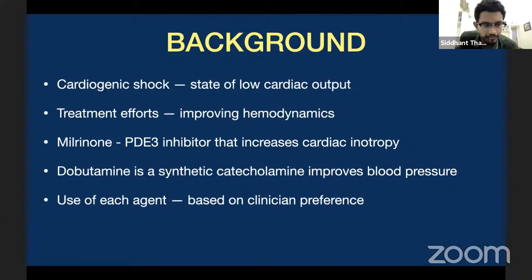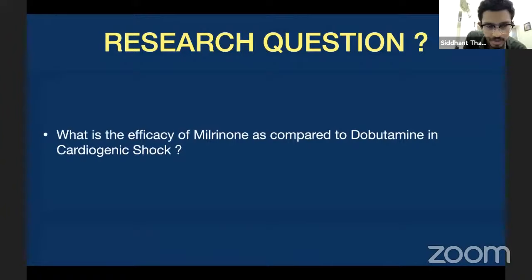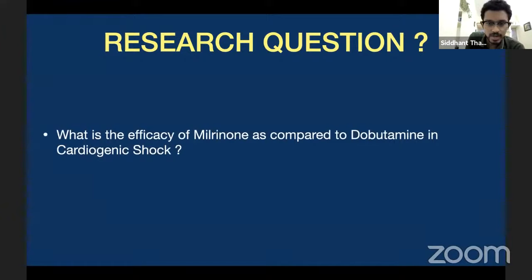With regards to our question — this 56-year-old male who is diabetic, hypertensive, has an acute MI, is in cardiogenic shock — you want to start something, but it's your own discretion to start. Will you start milrinone or dobutamine? That is the rationale why these people did the trial. The research question that needs to be answered: what is the efficacy of milrinone as compared to dobutamine in the prevention of mortality in cardiogenic shock? The third parameter to check is your PICO statement: P for patient, I for intervention, C for control, O for outcome.